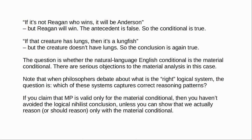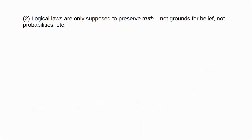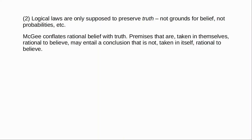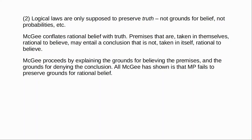Another response is given by Sinnott-Armstrong, Moore, and Fogelin in 'A Defence of Modus Ponens.' Their key point is that logical laws are supposed to preserve truth — not grounds for belief or probabilities. When we say modus ponens is a logical law, we mean the truth of the premises entails the truth of the conclusion. Their objection is that McGee conflates rational belief with truth. Sometimes premises that are rational to believe may entail a conclusion that is not rational to believe. In the McGee examples we may have good reasons for believing the two premises even if we don't have good reasons for believing the conclusion — McGee focuses on grounds for belief, and all he has shown is a failure to preserve grounds for rational belief, which modus ponens was never designed to do anyway.